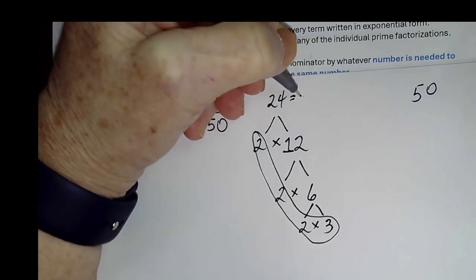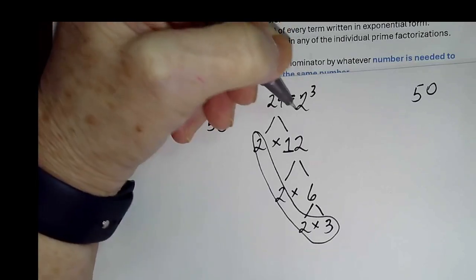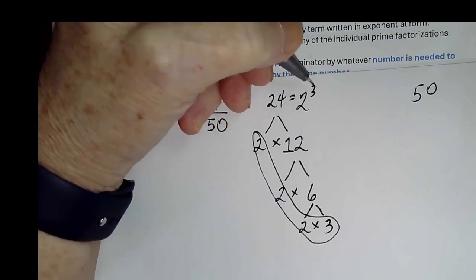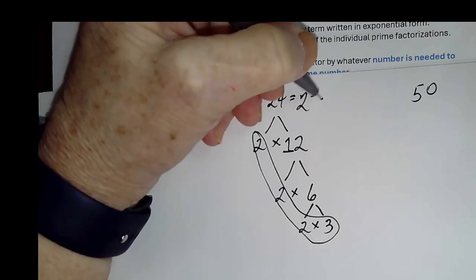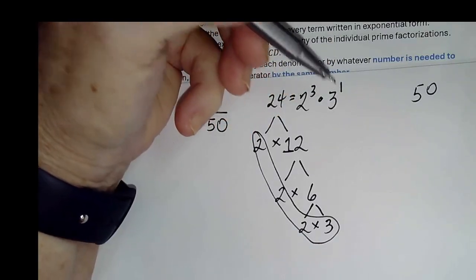So we have 3 twos. So the base is 2, the exponent is 3. That says how many twos. And then we have 1, 3. And I can write it that way, or I can write it without the little 1.